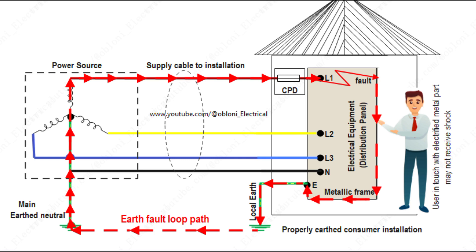For protective devices such as RCDs to operate effectively during an earth fault, this path must allow a substantial amount of the fault current to flow back to the supply source. If this path is not able to complete, then whatever protective devices you have in your circuit will not operate, including RCDs. So we have to make sure that the resistance of this path is as low as possible to allow a substantial fault current to flow back. This is why it is very important to do your earthing effectively.